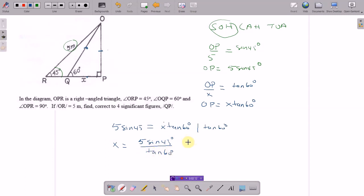You put the numbers in, you end up with 2.041 to 4 significant figures.